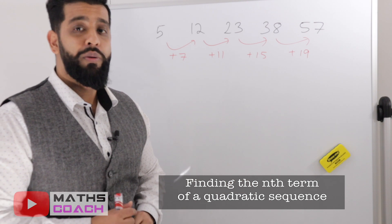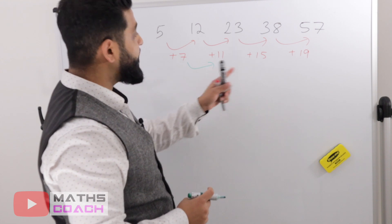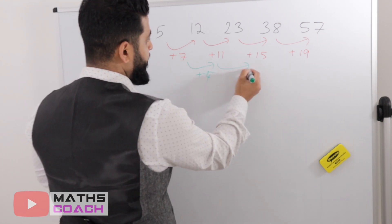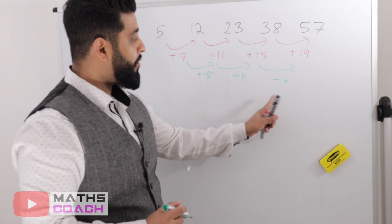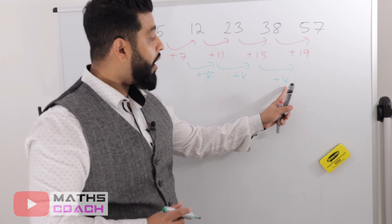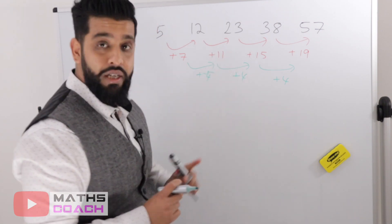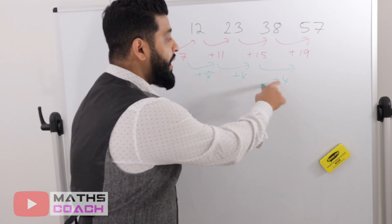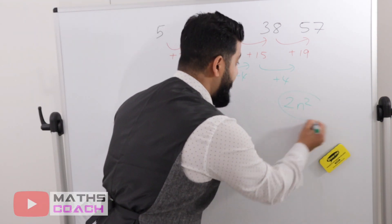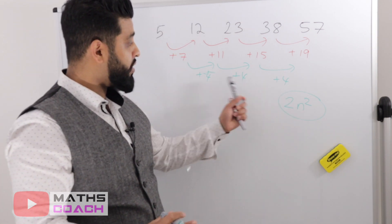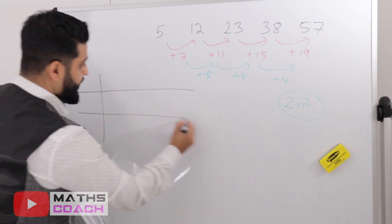We are dealing with a quadratic because the differences are not the same — if they were, it would be linear. Now find the difference of the differences: 7 to 11 is add 4, 11 to 15 is add 4, 15 to 19 is add 4. Don't write 4n — that's for linear sequences. We half 4 to get 2, so we write 2n squared.